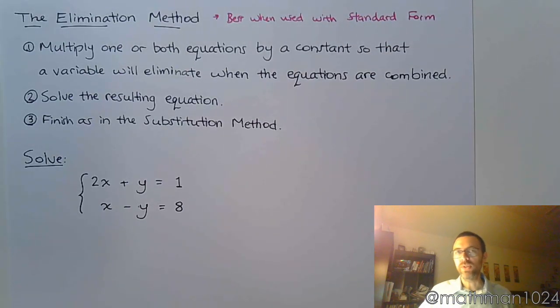So if your equations are in standard form, the elimination method is super fast, super easy, super useful. And here's what it says. It says that if you need to, multiply one or maybe both equations by a constant so that when you combine those equations, you get a variable to eliminate. And once you get one of those variables to eliminate, you have a nice equation to solve. Do that, and then you finish just like you did in the substitution method.